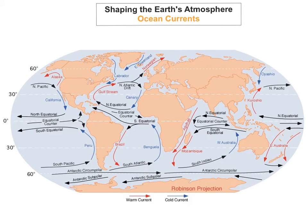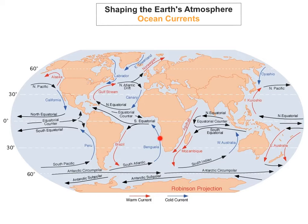So how do these currents work — why are some warm and why are some cold? Well, ocean currents are due to the unequal heating of the sea. All currents that are going towards the equator are cold, and all currents that are moving away from the equator are warm.